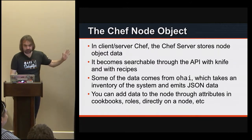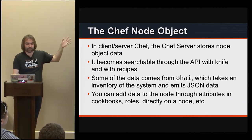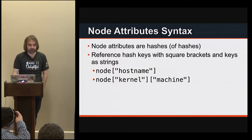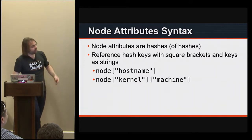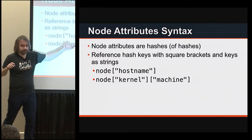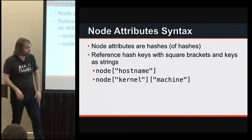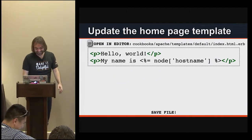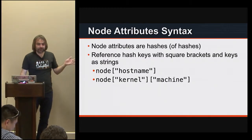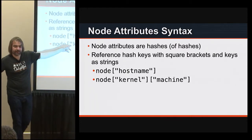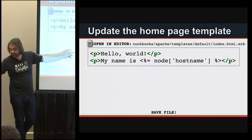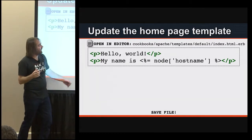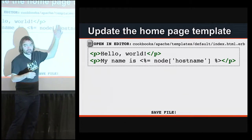The data in the client-server model is searchable — we've already talked about that. Nodes are actually hashes of hashes in Ruby syntax. So you just specify kernel, hostname, or anything like that. There are three different ways to write the key in the middle between the brackets: double quotes, single quotes, or a Ruby-ism called symbols — immutable strings. The third way is you put colon-hostname with no quotes, and it means the exact same thing.